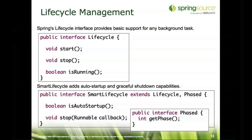You don't want to manually do that, and yet some of these things might depend on order — like wanting the database poller to start only after the message listener container starts. For that, there's a Phased interface where you can add ordering. It treats the lowest number first on startup and goes in reverse on shutdown. It also provides a callback method for stops so that you can do a graceful shutdown, cleaning up and closing connections before moving on to the next phase.